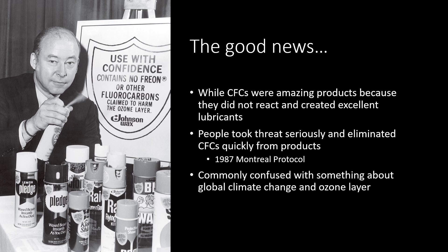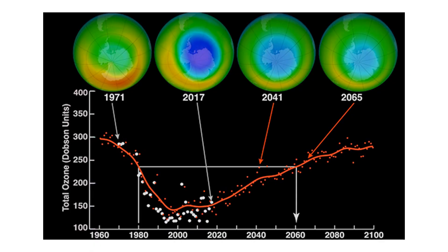I want to stress that people frequently get the ozone layer and climate change intermixed. These are not related items — they are only related in the sense that they both come from industrialized nations. Climate change is not caused by an ozone hole and the ozone hole does not speed up climate change. By 2100, our ozone hole will have been fully closed by current estimates, and we are right now in the 2020s climbing back up from a low that occurred in the late 1990s and early 2000s.